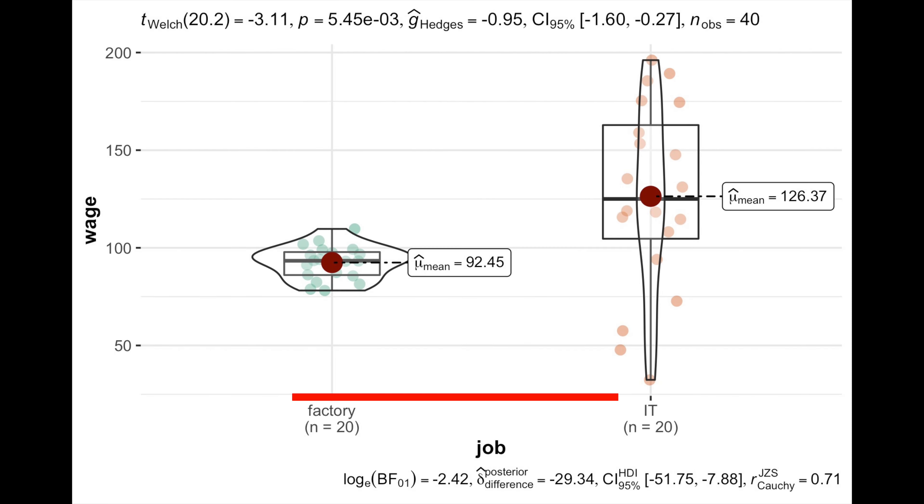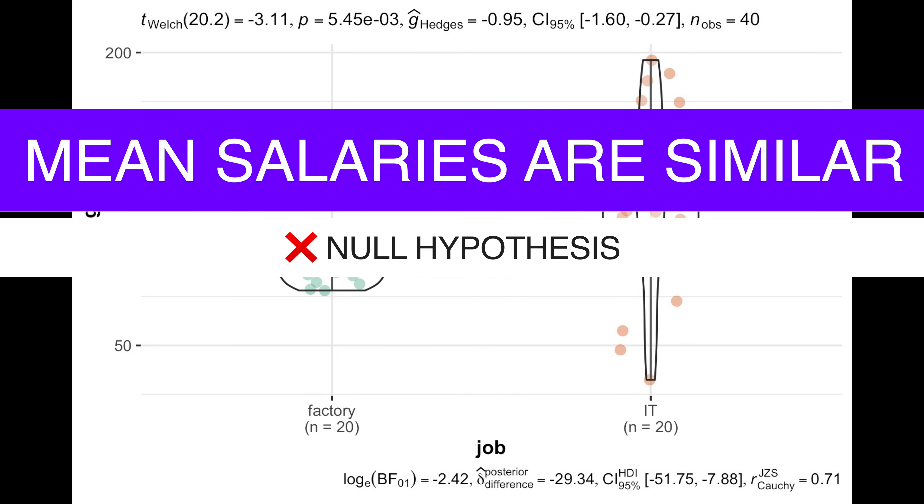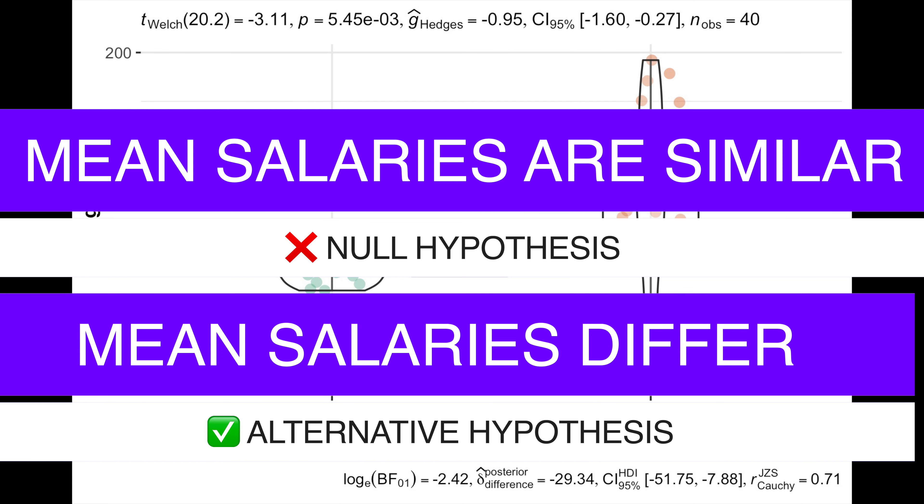the frequentist effect size and the Bayesian difference remained almost the same, while both p-value and Bayes factor became very significant and showed a strong evidence against the null hypothesis in favor of the alternative.